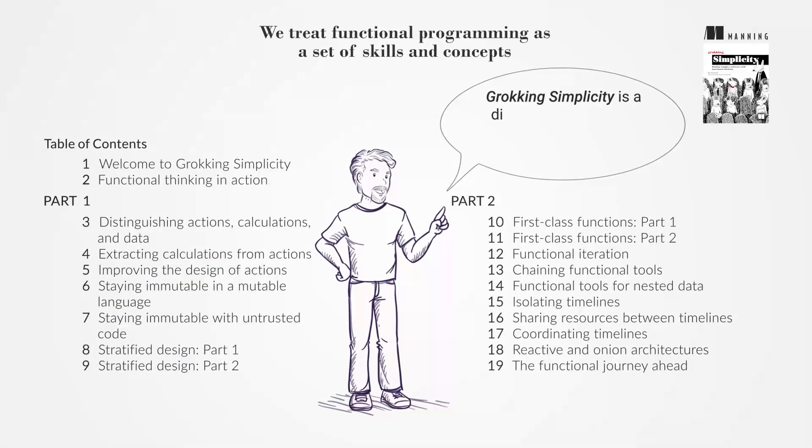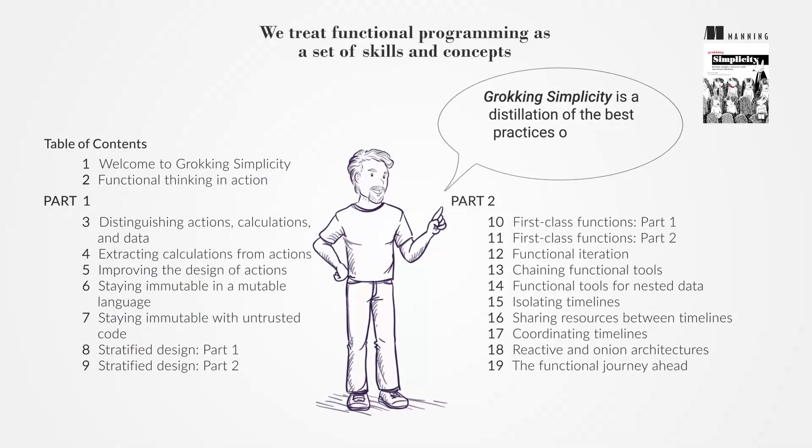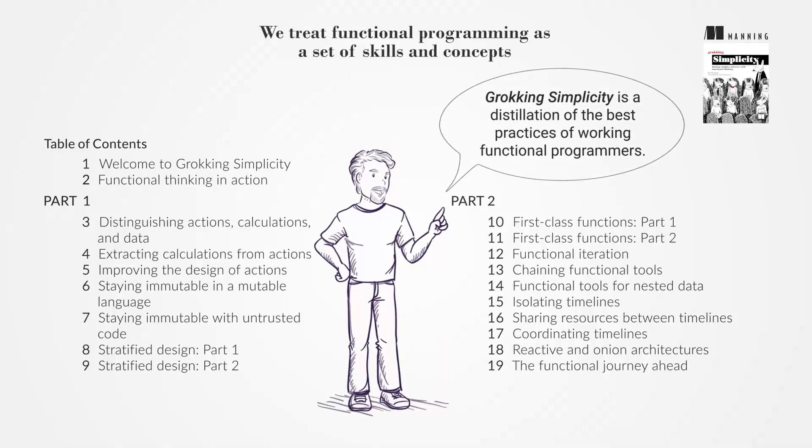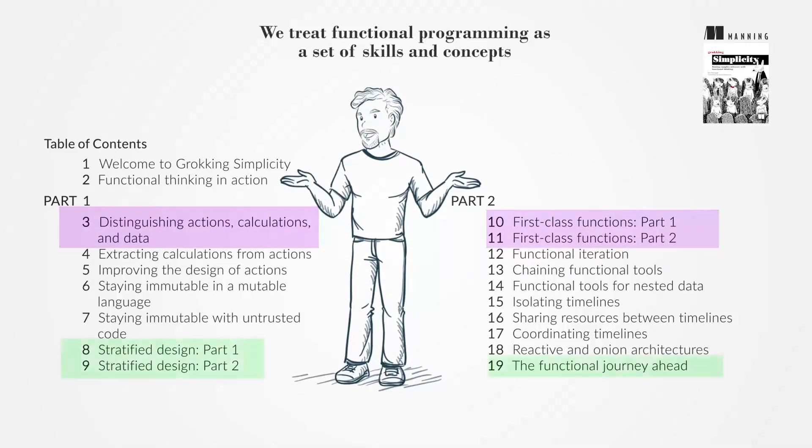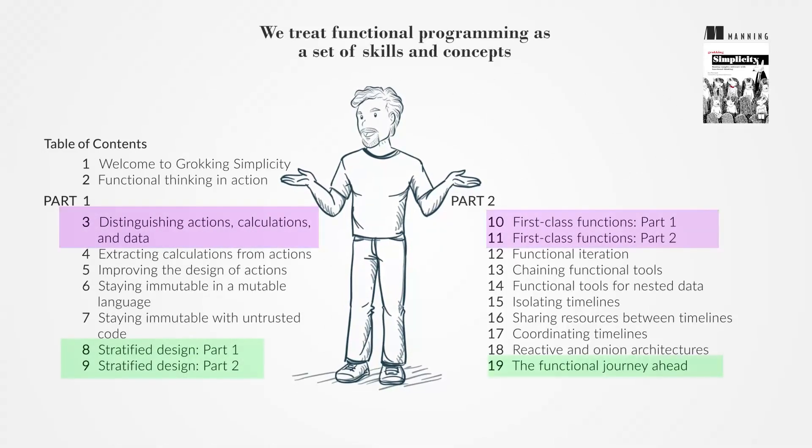Grokking Simplicity distills the skills, thought processes, and perspectives of working functional programmers, focusing on practical and powerful ideas. The book emphasizes skills and concepts applicable across programming languages, highlighting FP's universal coding practices.